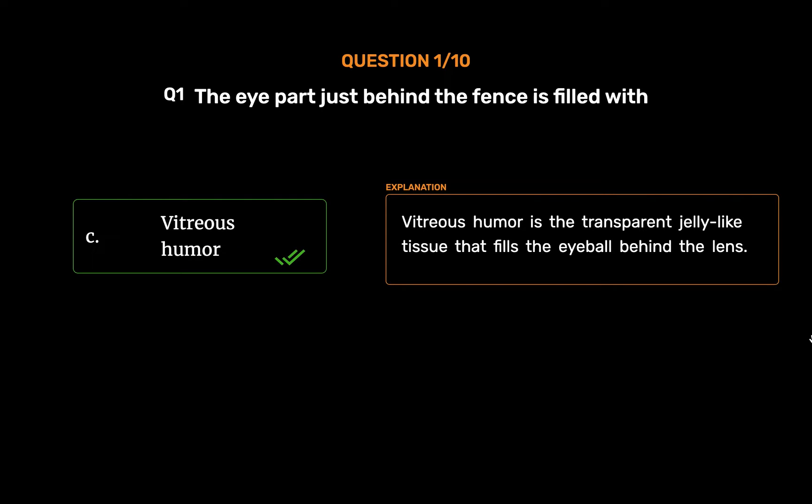Vitreous humor is the transparent jelly-like tissue that fills the eyeball behind the lens.